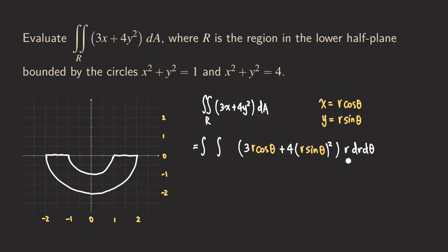Now the difficult part is finding the limits. For the inner integral, we need the limits for r. We can figure these out by drawing arrows starting from the origin at a specific angle θ. Moving outward from the origin, when we hit the inner circle we begin including the region, and we include everything from that inner circle out to the outer circle. The dashed portion — inside the inner circle — is not part of our region.